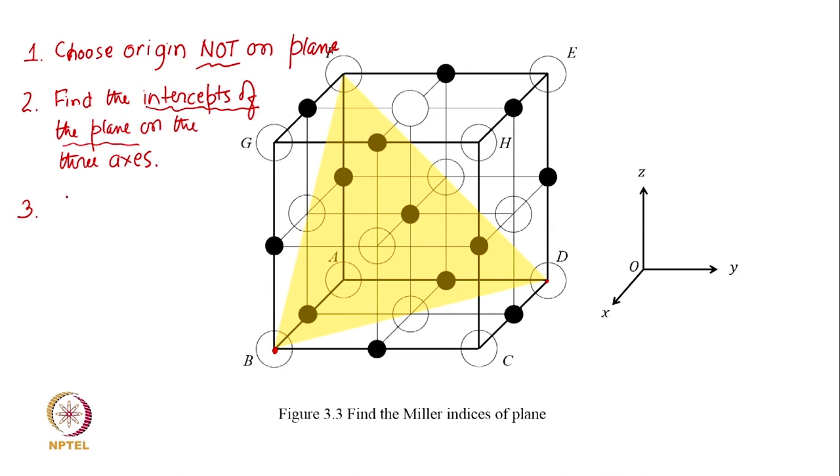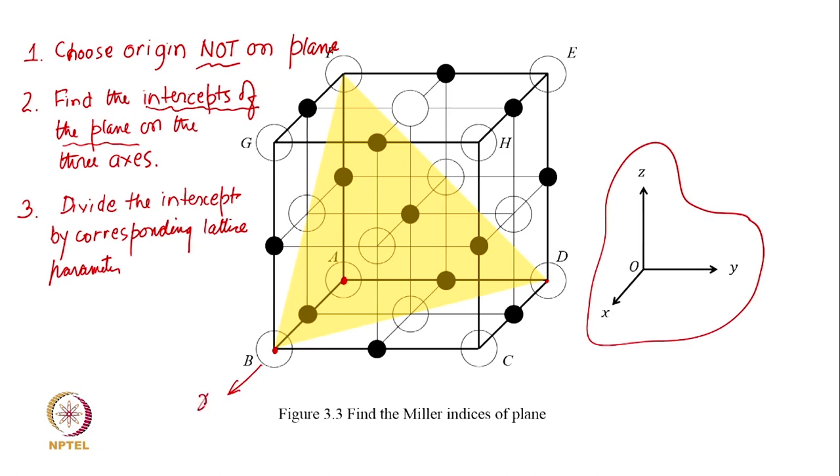Then divide the intercept. Again we do that fractional thing, divide the intercept by corresponding lattice parameter. For this plane let us choose the origin A. Then we are finding that the x axis intercept, and x, y, and z I have selected in this orientation. From origin A, x is here, y is here, and z is there, and the unit cell length was a.